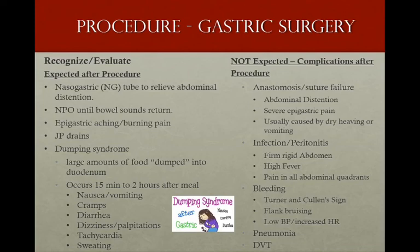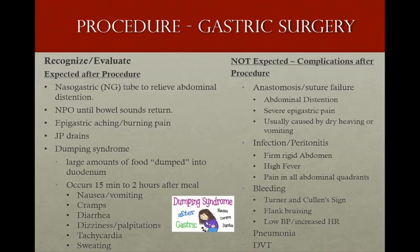We want to prevent suture failure — surgeons do not want their work undone. Dry heaving and vomiting cause pressure and strain on sutures. Anastomosis failure — where two joined pieces separate — can cause leaking of gastric contents into the abdomen or thoracic space. Nausea control is therefore very important after gastric surgery. We proactively give nausea medications rather than waiting for the patient to become nauseated, to avoid vomiting and dry heaving that could break suture lines.